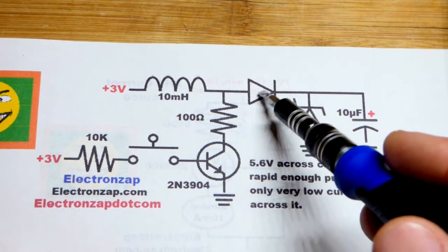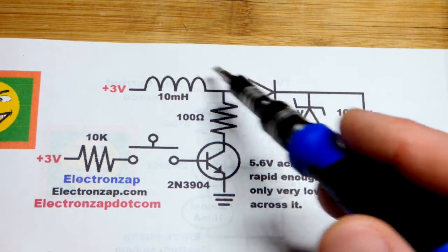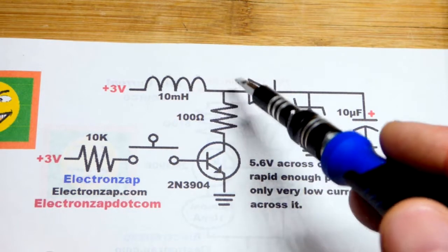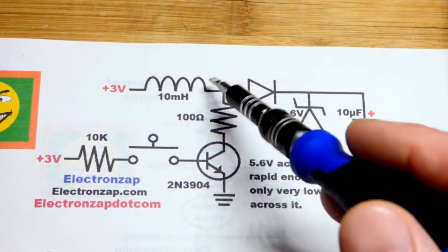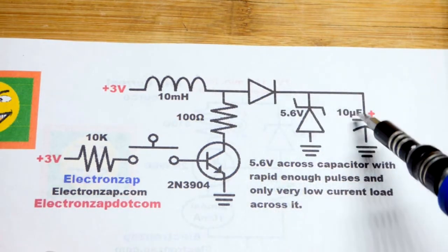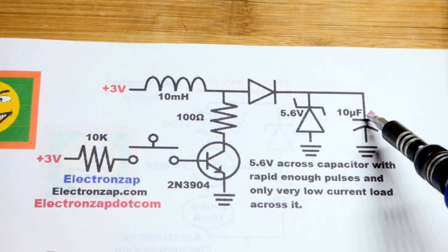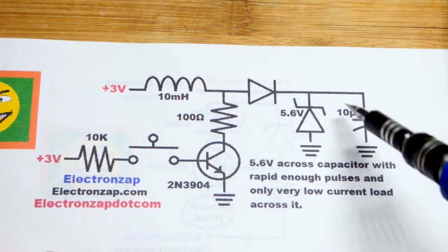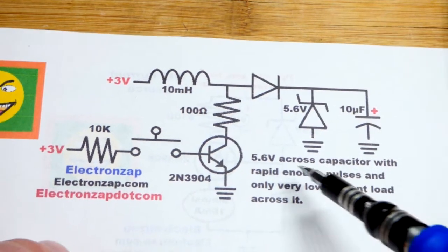So usually you have a diode in parallel with it, but since we're going to capture that kickback, we have it in series with it so that it can keep flowing and charge up the capacitor. Even though the capacitor will be at the supply voltage, it'll just keep pumping current in and the capacitor voltage will go up. So that's how it boosts the voltage.